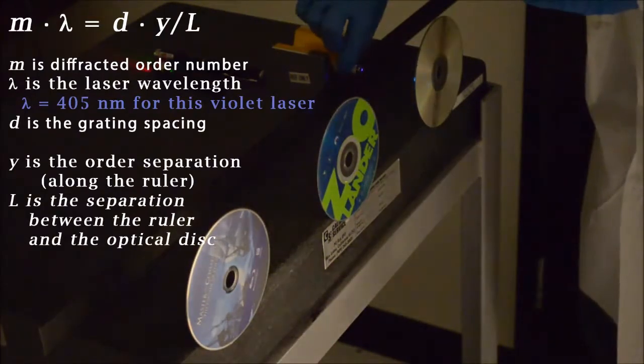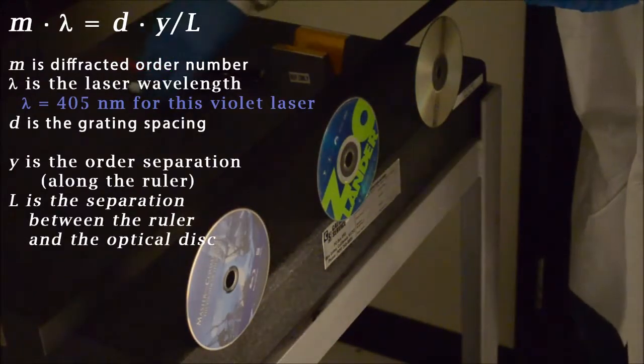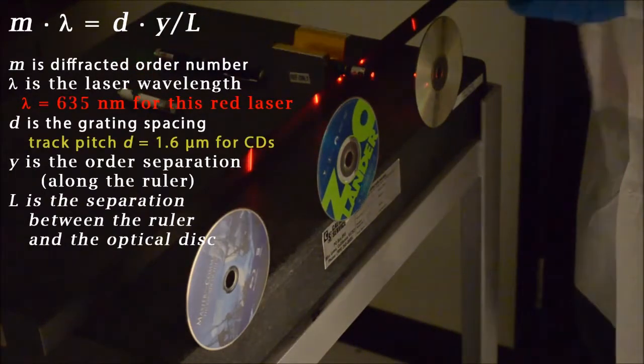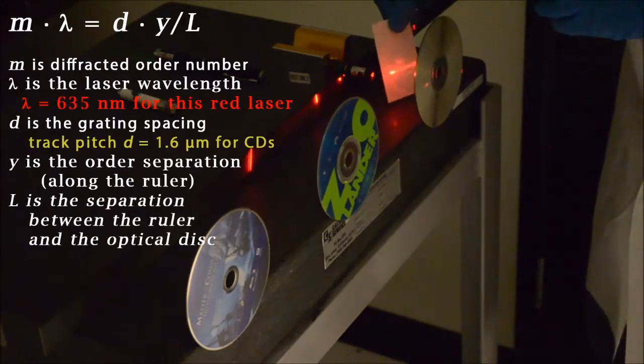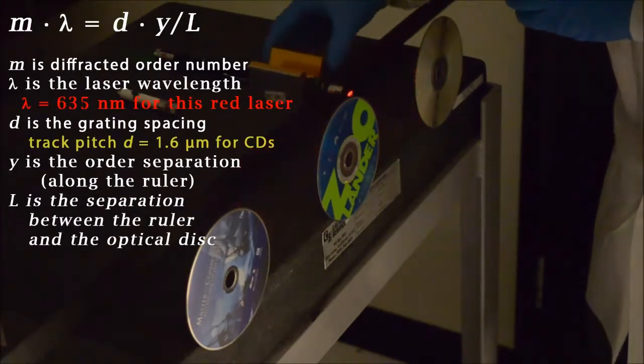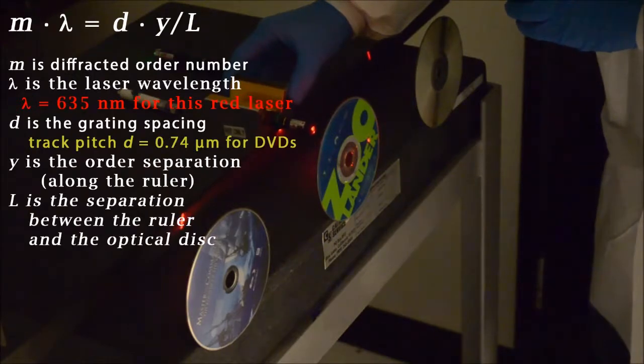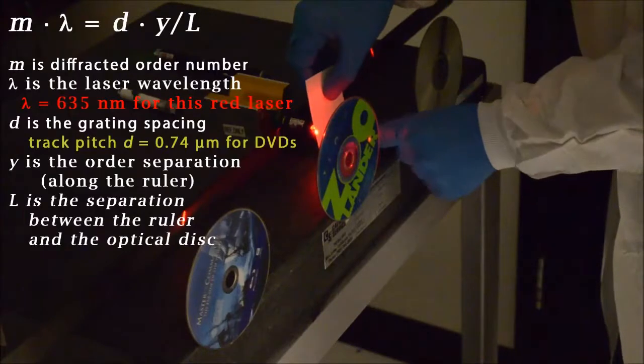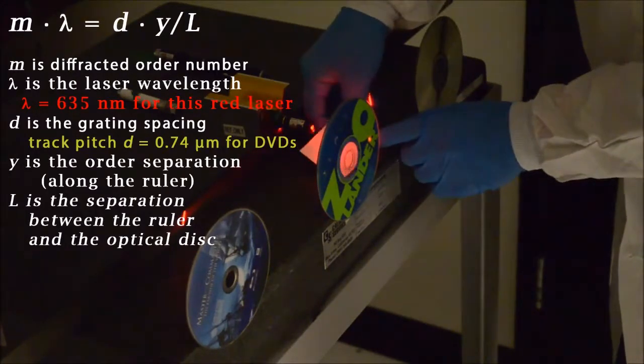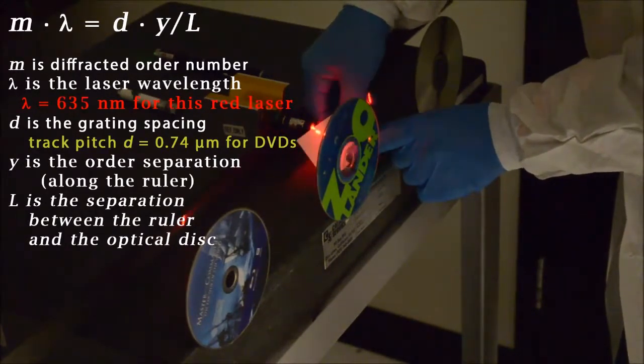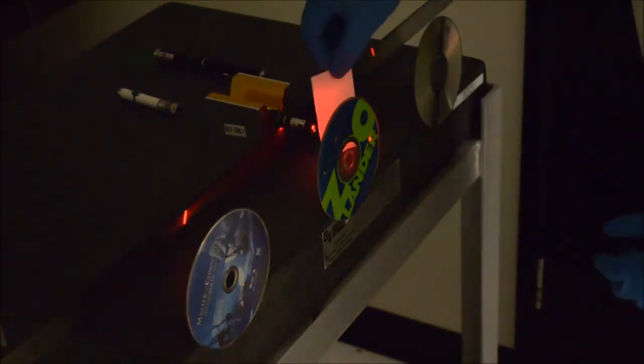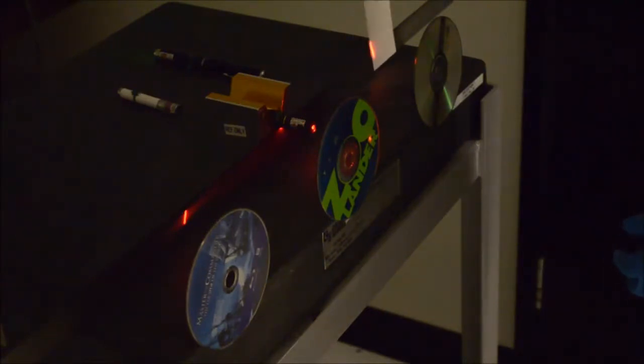Now we can try different media and look at how they diffract the light. Let's put our red laser back on the V-block and look at the zero, first, and second diffracted order. Then we'll move over to the DVD. Because the DVD operates with a shorter wavelength light, the diffraction actually goes to larger angles. Once I get the zeroth order lined up, you can see the first diffracted order is way over here, a longer distance away than it was for the CD.